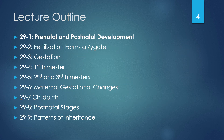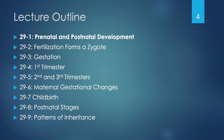In today's lecture, like all of our other lectures, we're going to proceed through the chapter in order, so if you want to follow along with your text, you can. We'll start with prenatal and postnatal development, then move into how fertilization forms a zygote, then discuss gestation, the first trimester embryonic period, the second and third trimesters fetal period, maternal gestational changes, childbirth, postnatal stages of development, and finally patterns of inheritance.